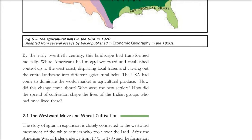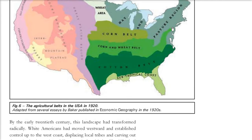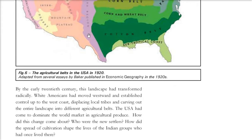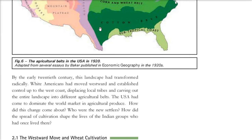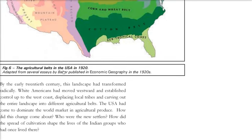By the early 20th century, the landscape changed dramatically and radically. The white Americans, who were previously confined to a small strip, shifted westward and displaced the local tribes. The USA had come to dominate the world market in agricultural produce, mainly grains. We will talk about how this happened and what happened to the natives.